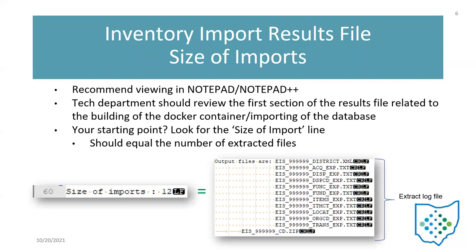When you're reviewing the inventory results file — after you've extracted the data and it's been imported — a results file is created. I would recommend viewing the results file in Notepad or Notepad++ as it makes it easier to read. Your tech department should review the first section related to the building of the Docker container and the importing of the database information. Your starting point is to look for the 'size of import' line. In this example, it's on line 60 and it says the size of import is 12.